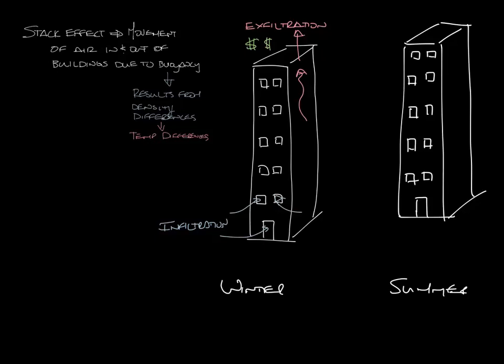In the summer, stack effect still happens, but the air inside the building is colder and denser than the warm outside air. So you get what's called a reverse stack effect — warm air is drawn into the top of the building and exits out the bottom of the building as the cold air falls.